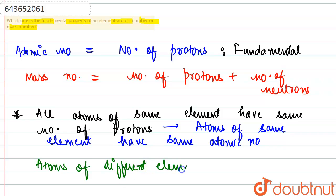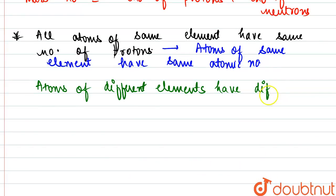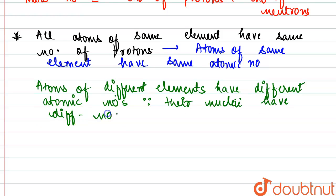Atoms of different elements have different atomic numbers. Why? Because their nuclei have different numbers of protons.